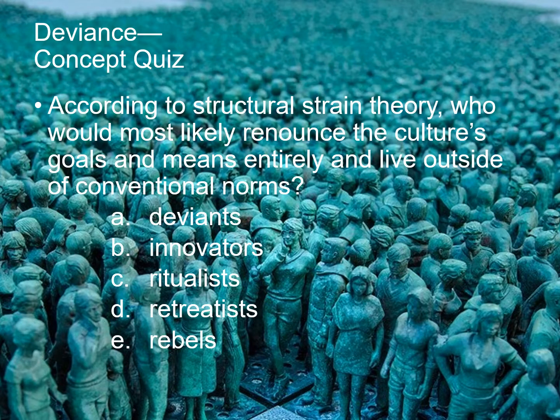Let's do a quick quiz on the typologies from Merton. According to structural strain theory, who would most likely renounce the culture's goals and means entirely and live outside of conventional norms? A. Deviants, B. Innovators, C. Ritualists, D. Retreatists, E. Rebels. The answer is D, Retreatists.